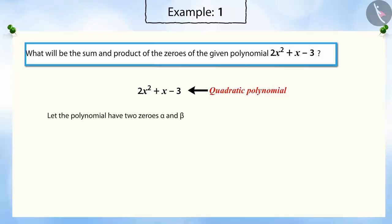Let's assume the polynomial has two zeros, alpha and beta. In the previous video, we learnt that the sum of the zeros of the quadratic polynomial is the negative ratio of the coefficient of x to the coefficient of x squared. Substituting the values of the coefficients of x and x squared gives the sum of the zeros as minus 1 by 2.